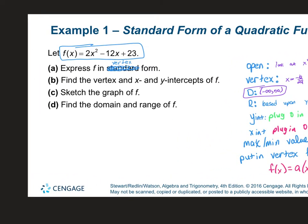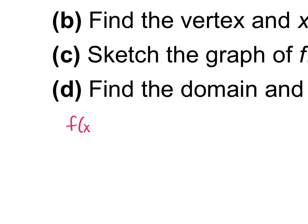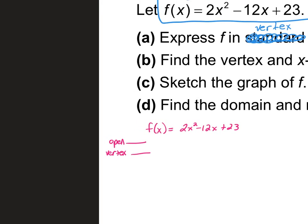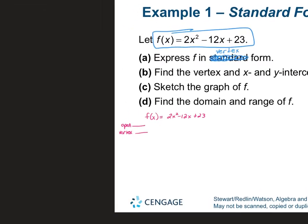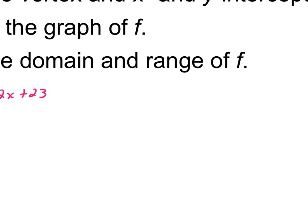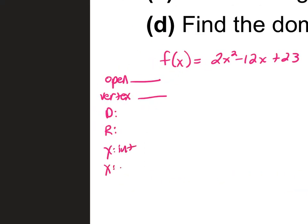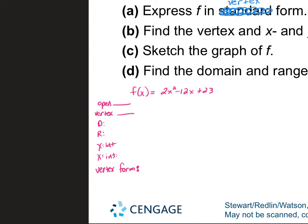So we have f(x) = 2x² - 12x + 23, and we're going to find all of this: which way it opens, the vertex, domain and range, x and y intercepts, and vertex form. Which direction does my parabola open? It opens up because 2x squared is positive. I'll draw myself a little picture because that helps me remember.